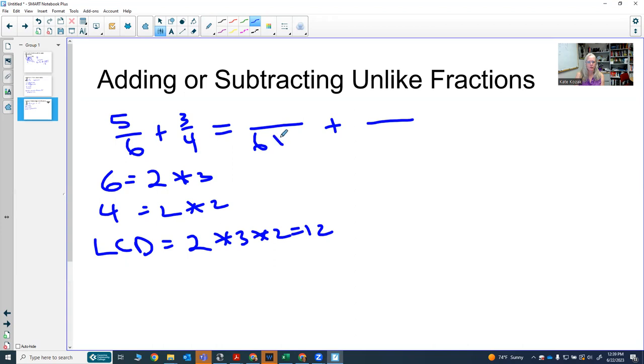6 times 2 is 12. If I multiply 2 times the denominator, I need to multiply 2 times the numerator. 4 times 3 is 12. So if I multiply 3 times the denominator, I need to multiply 3 times the numerator.